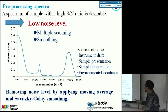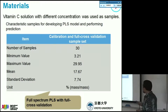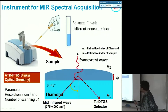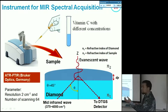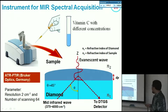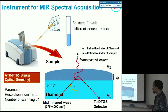In terms of materials, we use 30 samples of vitamin C with different concentrations for developing the full spectrum PLS model, using both original spectra and pre-processed spectra. For the instrumentation, we use an ATR-FTIR from Bruker. A very small amount of sample is placed on the diamond crystal prism, the evanescent wave interacts with the sample, and the resulting absorbance is collected at the detector.